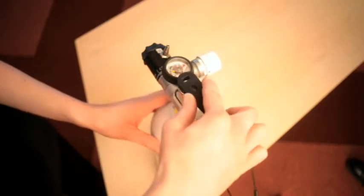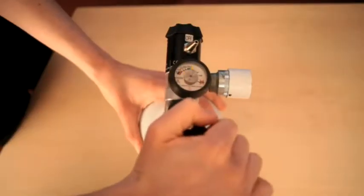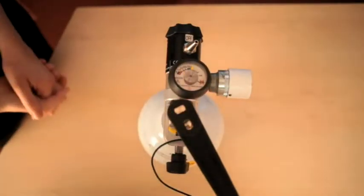Turn on the cylinder valve slowly. Check that the contents gauge points to a green or white part of the dial. If there is insufficient gas for treatment, replace the cylinder.